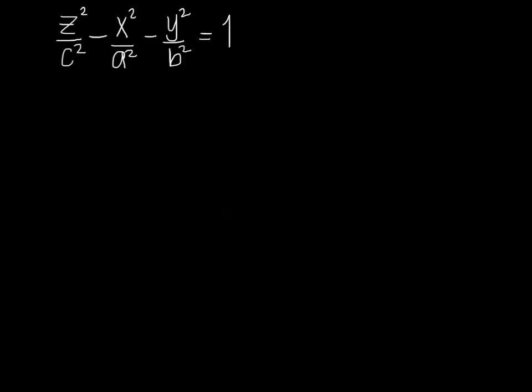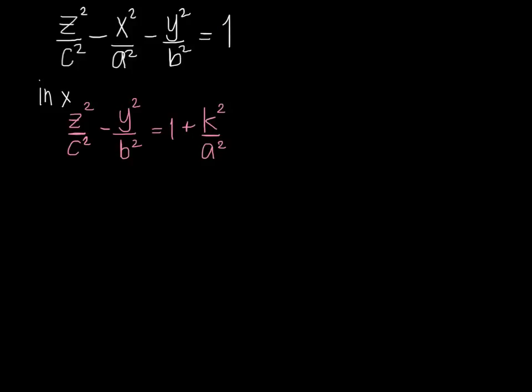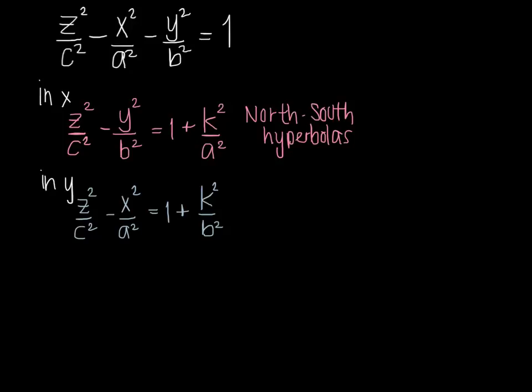Our next quadric has every single term as a quadratic term — two are negative, one is positive — and there's a non-zero constant on the other side of the equal sign. Looking at traces in X: there is always something positive on that side of the equation, so these are hyperbolas. In the YZ plane, these are north-south hyperbolas. Moving to traces in Y, we have the exact same occurrence: more north-south hyperbolas.